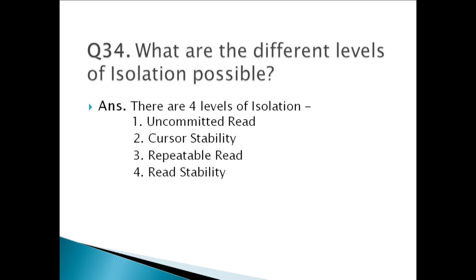The next level is Read Stability. It guarantees all its predecessors' protections, and subsequent reads cannot see any new data. This is the most restrictive isolation level of all and allows for the least concurrency. At this level, no read phenomena are possible.